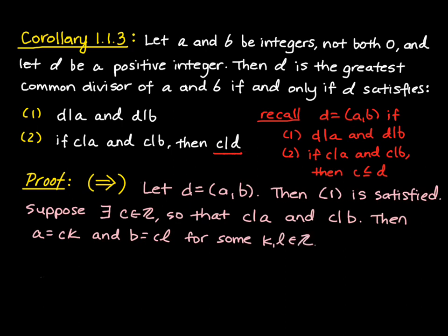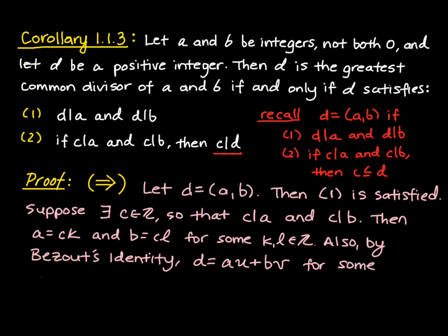Also, because D is the greatest common divisor of A and B, we can use Bezout's identity to write D as a linear combination of A and B. So let's say that there exists a U and a V so that this equality holds true.